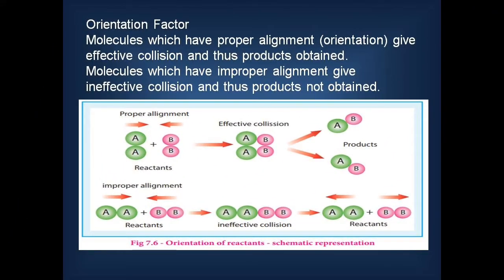Next is the orientation factor. In the first diagram, one atom of molecule A reacts with one atom of molecule B, and similarly the other atom of A is directly attacked by another atom of B — this is called proper alignment, and only with proper alignment do we get effective collision and product formation. In the second diagram, only one atom of A reacts with one atom of B — this is improper alignment, giving ineffective collision and only reactants. So even with sufficient energy, the orientation factor must also be considered.